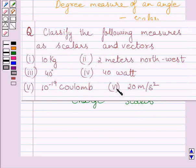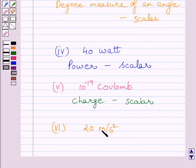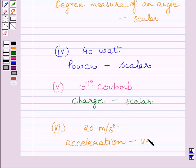The sixth part is 20 meters per second square. Meter per second square is a unit of acceleration, and acceleration has magnitude as well as direction, so it is a vector quantity.